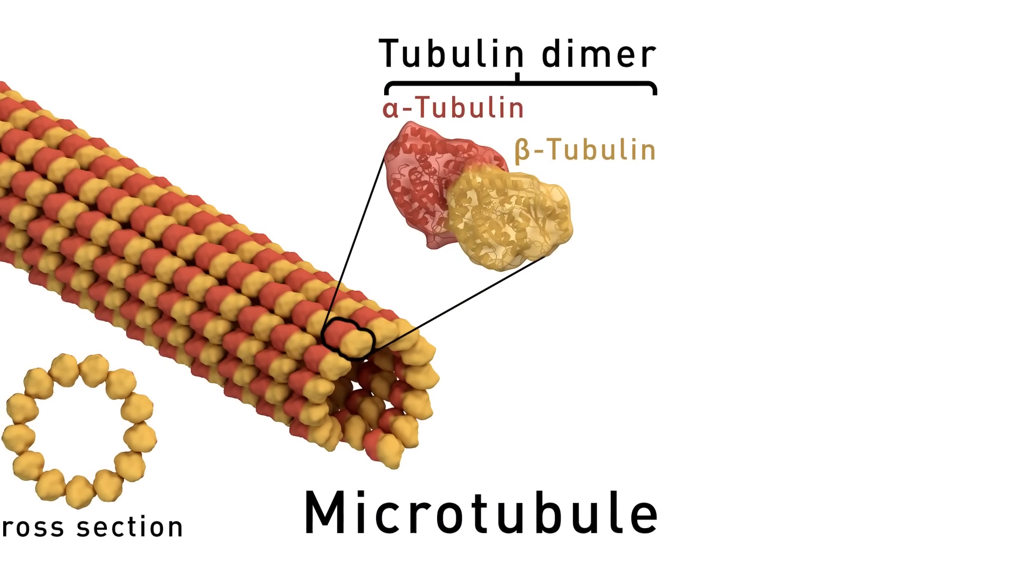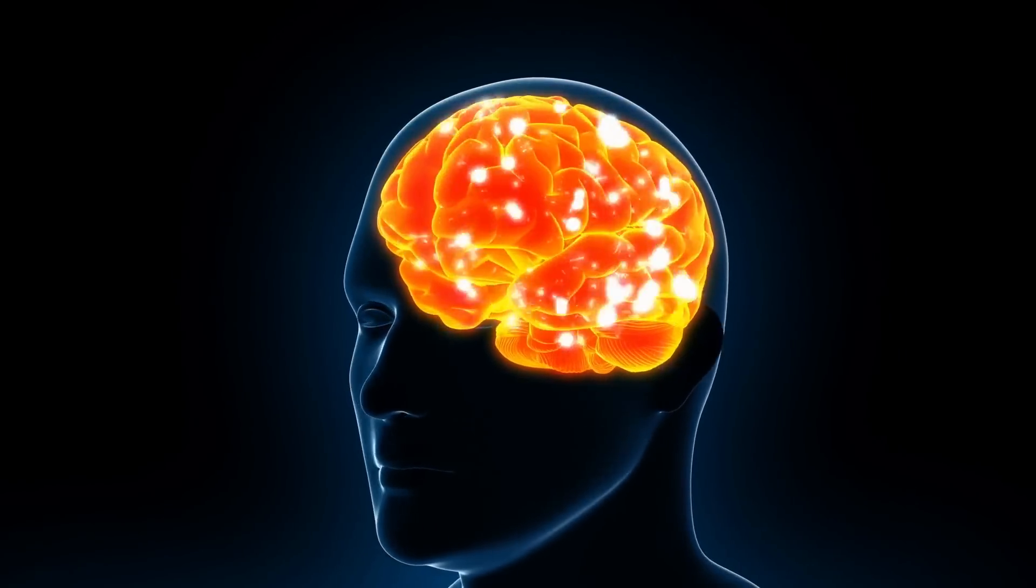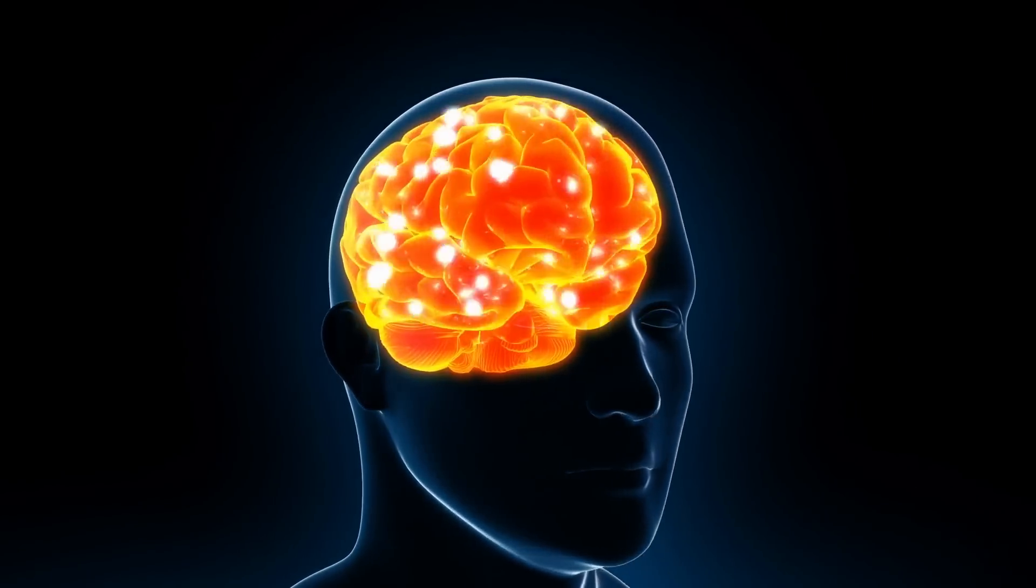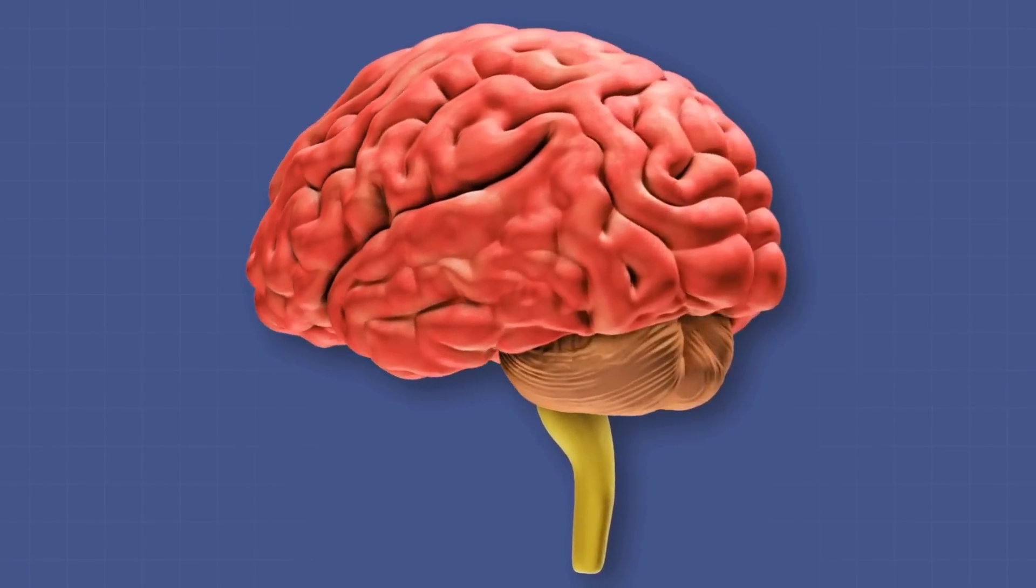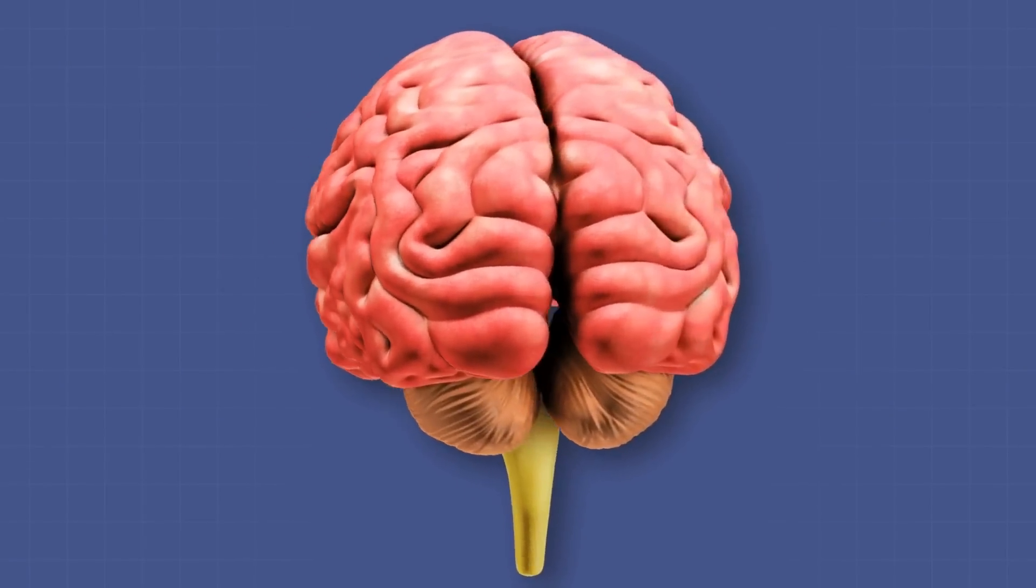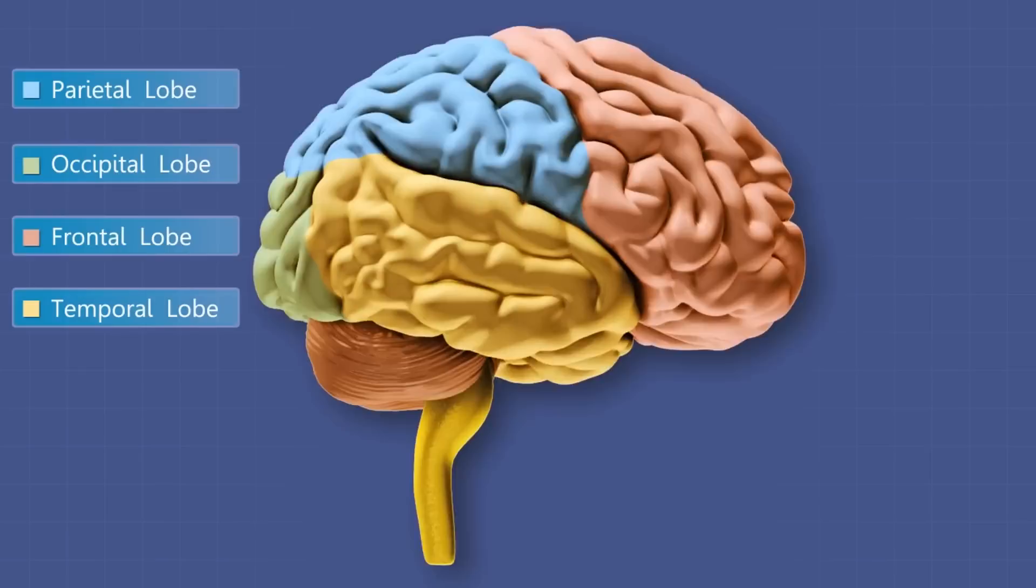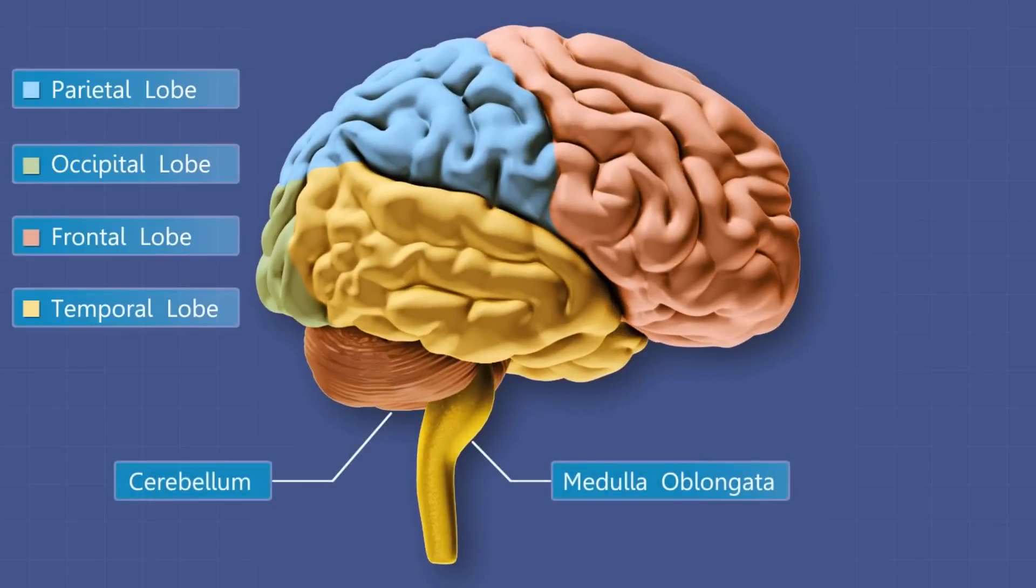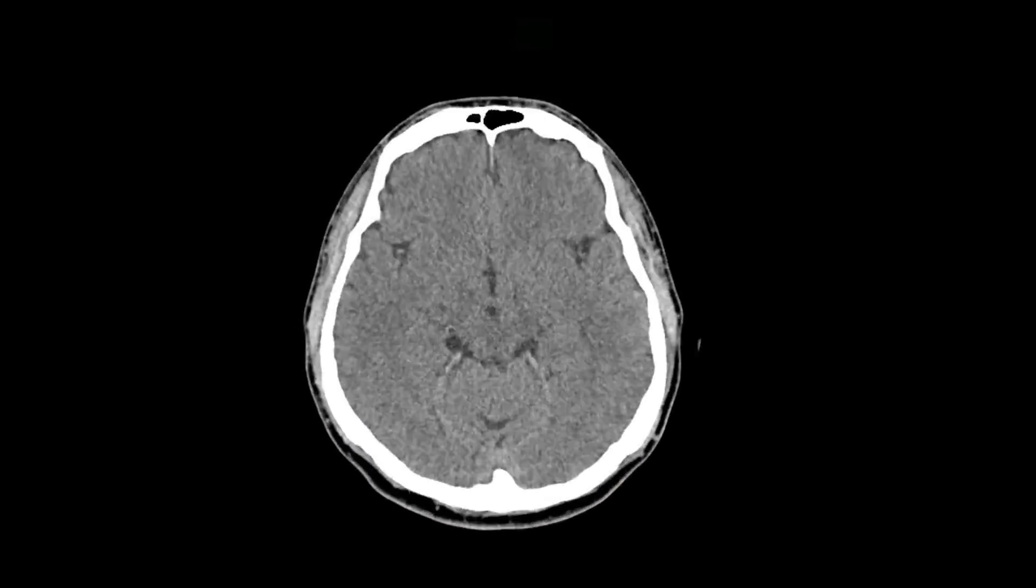These little things called microtubules are absolutely fundamental to consciousness. Not all parts of the brain are the same in this respect. You see you've got the cerebrum, this is the part at the top, divided down the middle. When you see brains, that's what you normally see with the convolutions. But right underneath and at the back there's a thing called the cerebellum, which looks more like a ball of wool or something.